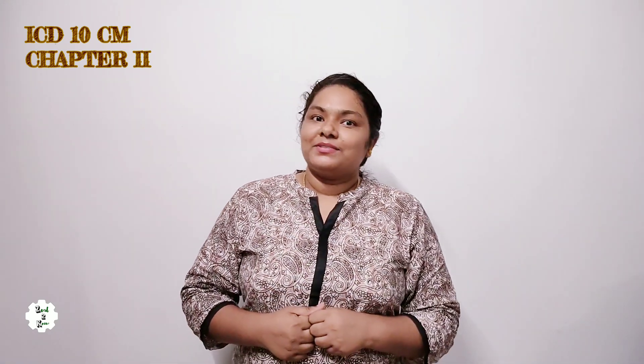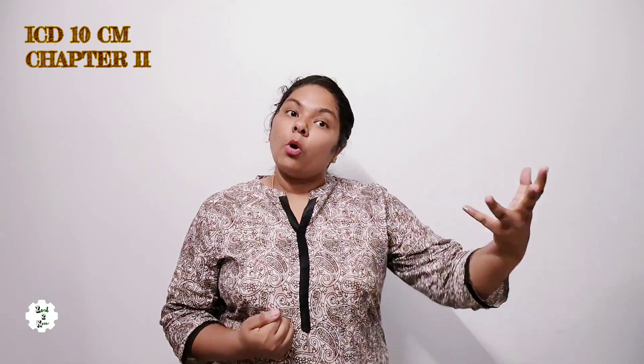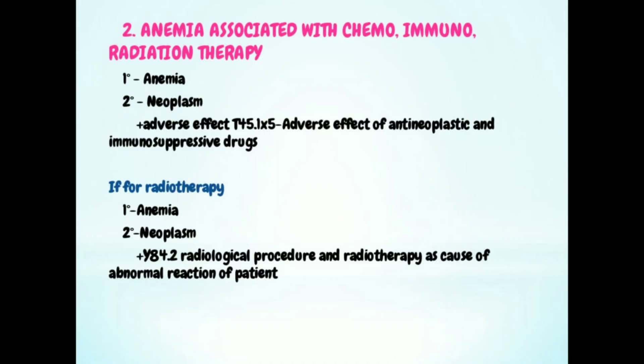Next comes coding and sequencing of complications. Here is one flip code: anemia in malignancy. If a patient has cancer and has developed anemia because of the cancer, even if the patient comes for treatment of anemia, the primary should be the malignancy — because the anemia developed due to it. So primary is malignancy and secondary is anemia.